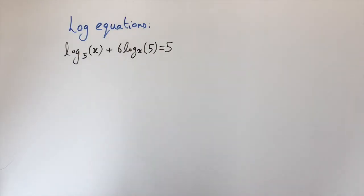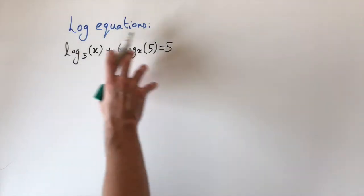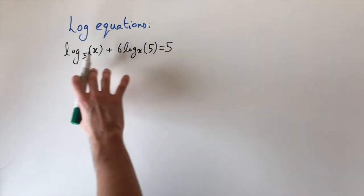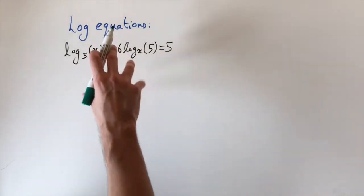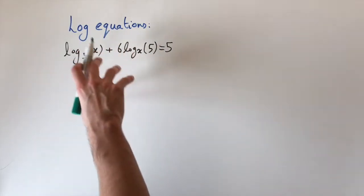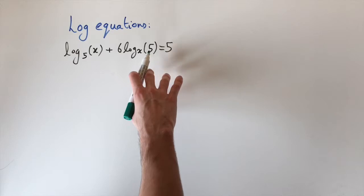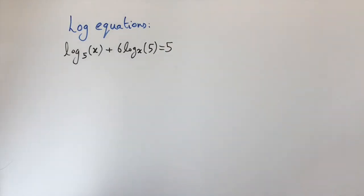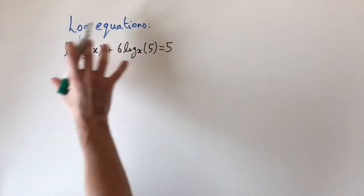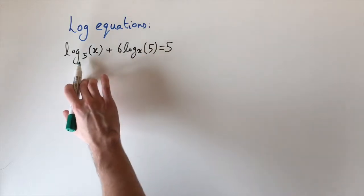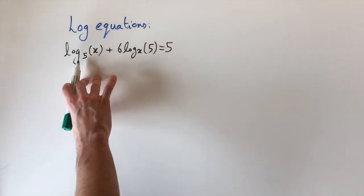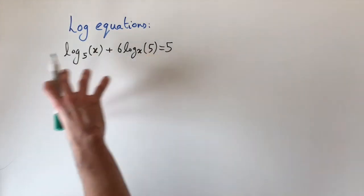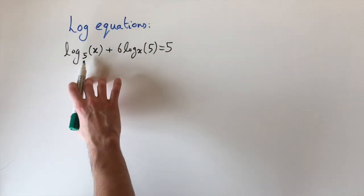In this video we're going to be looking at solving logarithmic equations. For example, we have log to the base 5 of x plus 6 times log to the base x of 5 equals 5. The first strategy is to get everything in terms of the same base — here we have a logarithm in base 5 and one in base x.